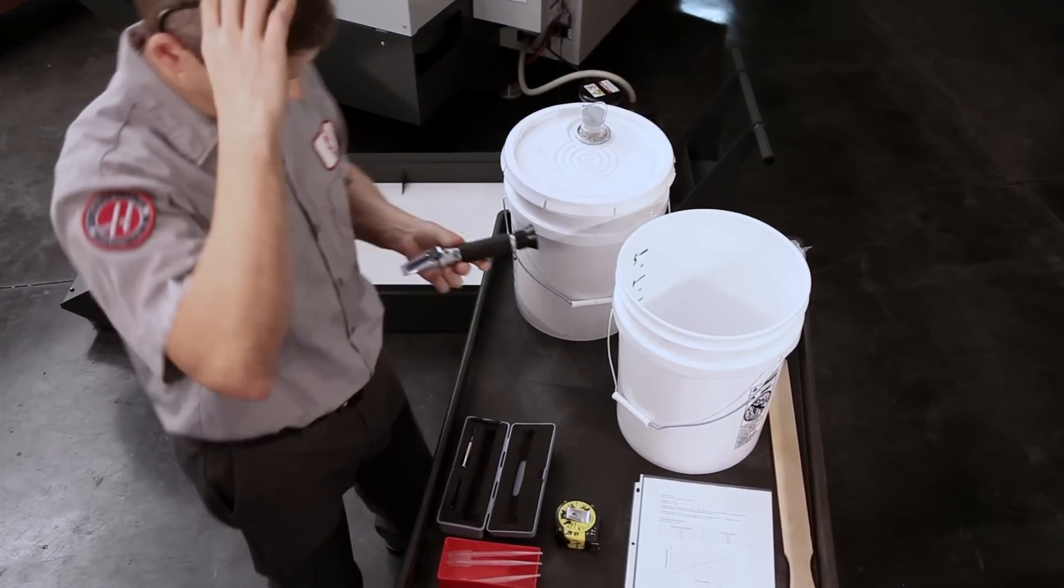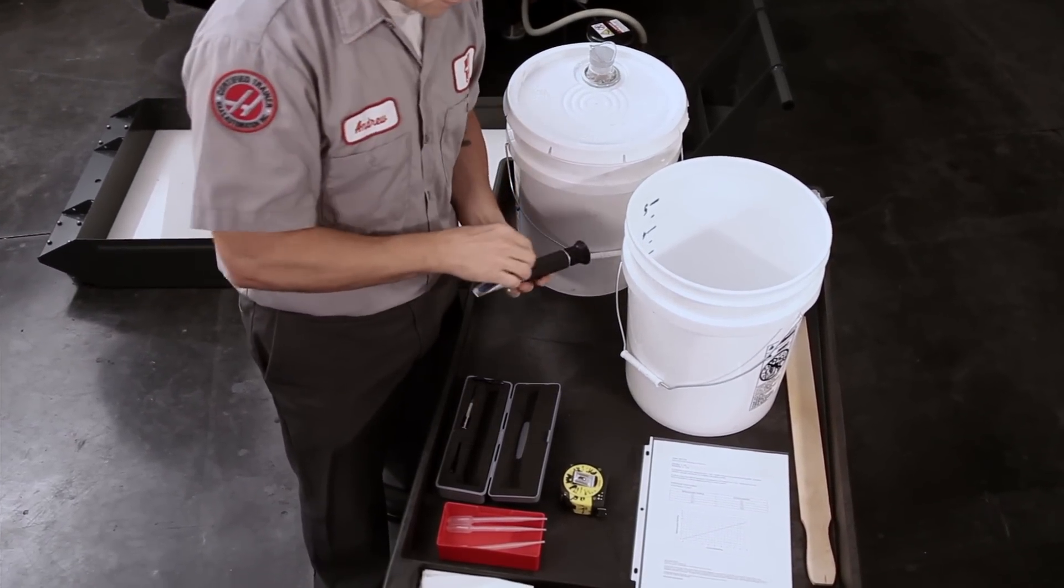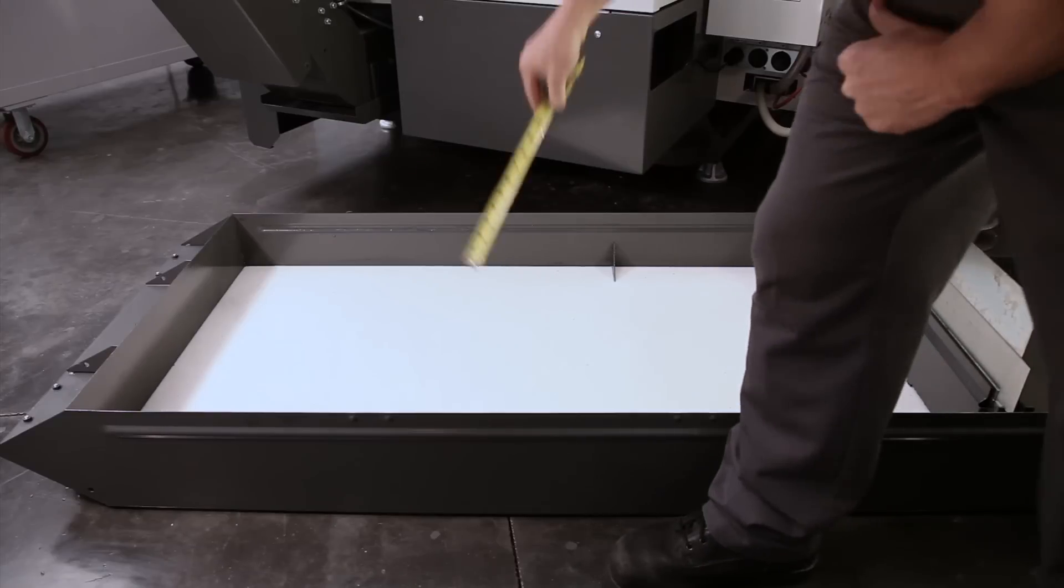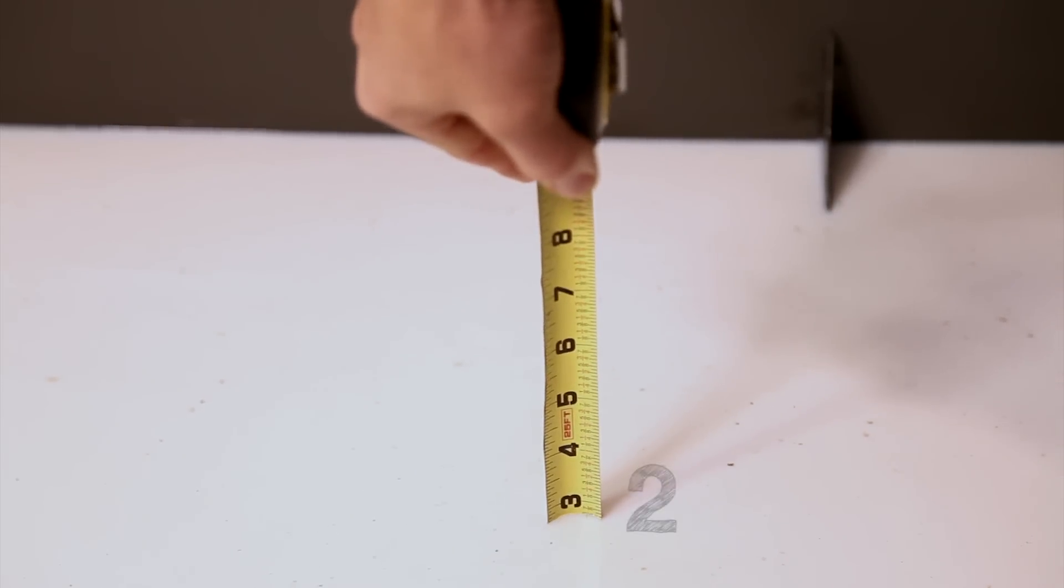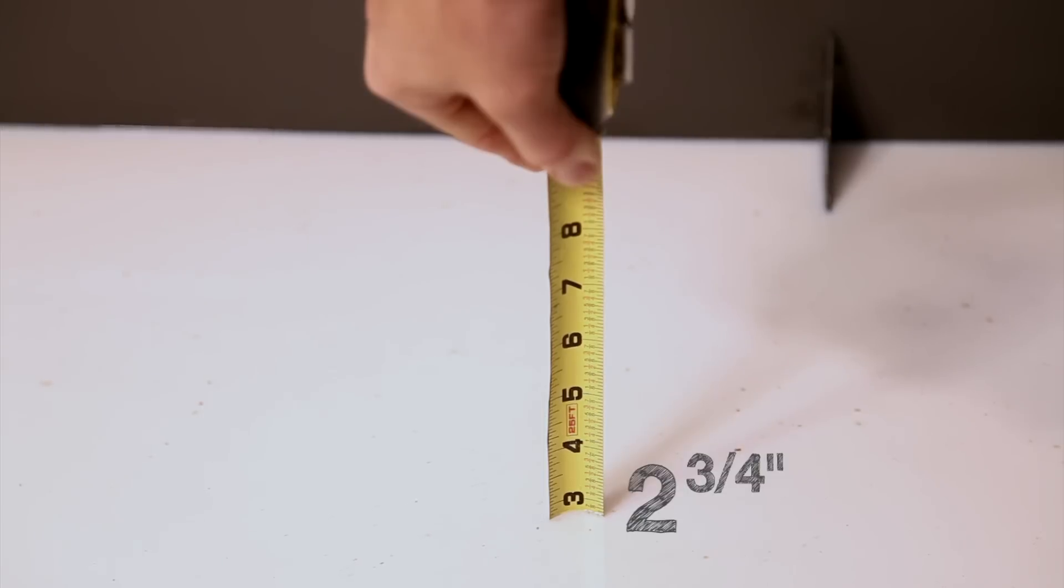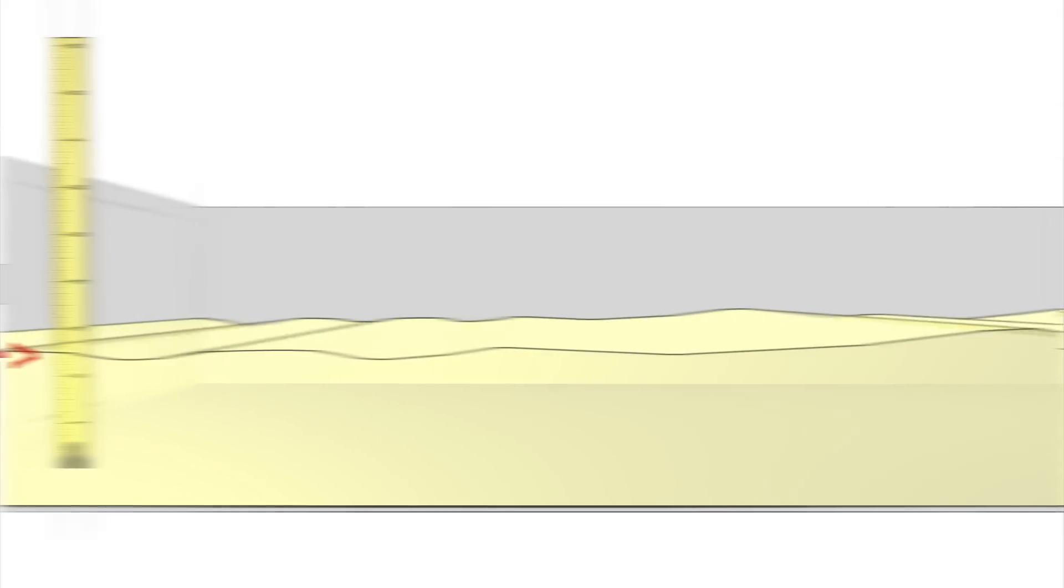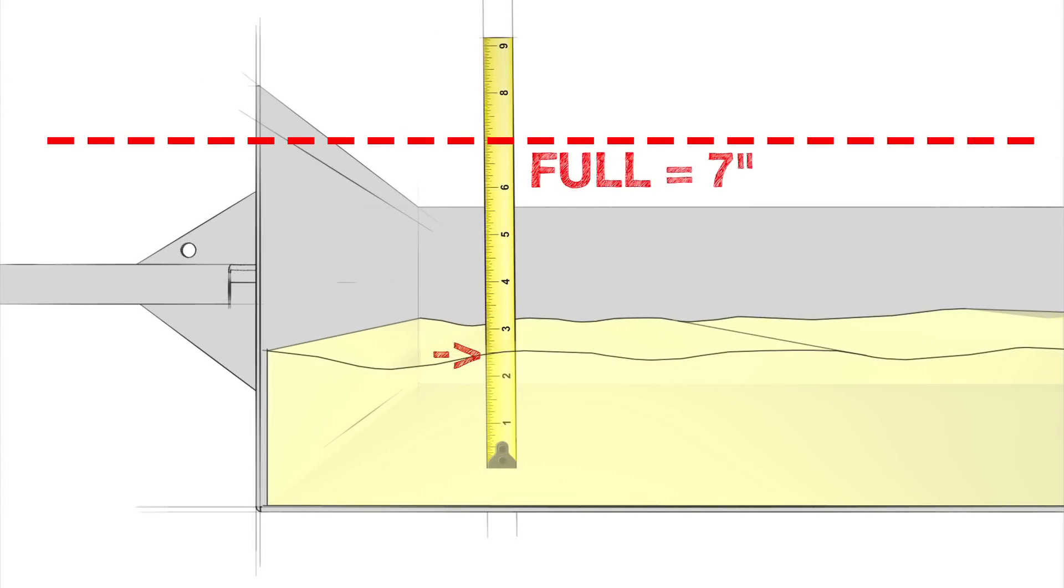Let's fix this low concentration 55 gallon tank. First, measure the coolant level in your tank. We get two and three-quarter inches.